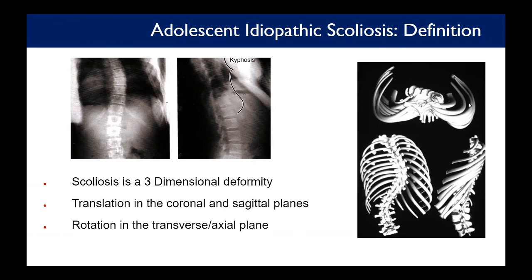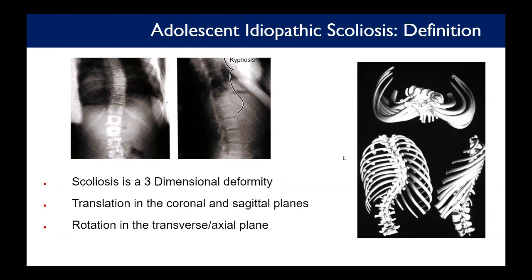There's translation in the coronal and sagittal planes. Generally speaking, AIS kids have a hypokyphotic thoracic spine — a pretty straight thoracic spine in the sagittal plane — and there's a rotational and translational component in the axial plane. Three-dimensional models can help you understand that better than 2D X-rays.